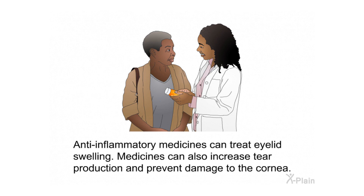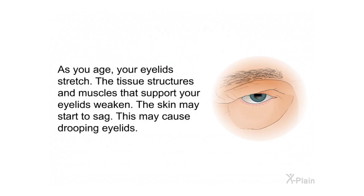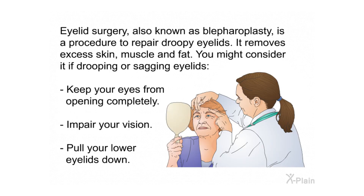Anti-inflammatory medicines can treat eyelid swelling. Medicines can also increase tear production and prevent damage to the cornea. As you age, your eyelids stretch and the tissue structures and muscles that support your eyelids weaken; the skin may start to sag, causing drooping eyelids. Eyelid surgery, also known as blepharoplasty, is a procedure to repair droopy eyelids by removing excess skin, muscle, and fat. You might consider it if drooping or sagging eyelids keep your eyes from opening completely, impair your vision, or pull your lower eyelids down.